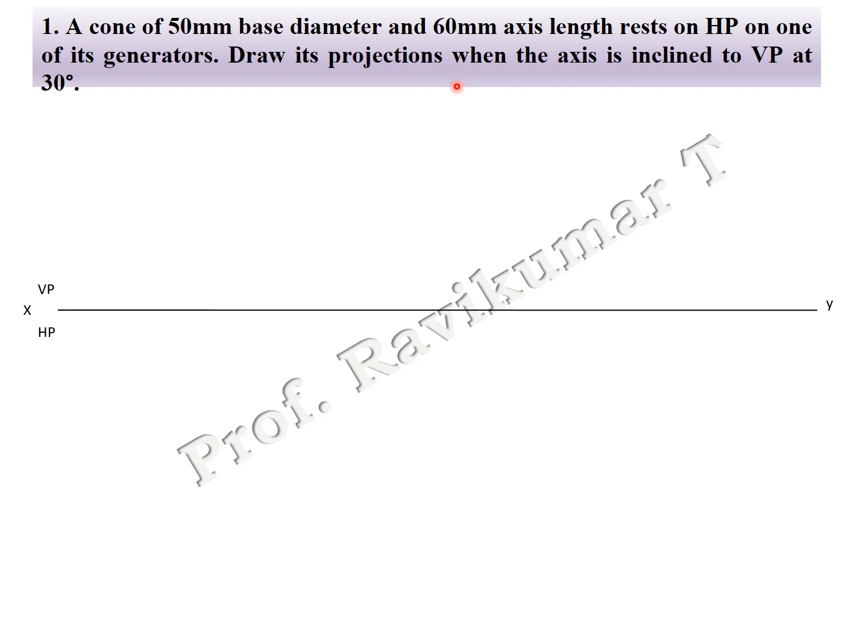In the slant edge and slant triangle face problems, if the word 'appear' is absent, we call it a locus problem. Similarly here, the word 'appear' is absent, so it is a locus problem and we have to find out the beta angle.